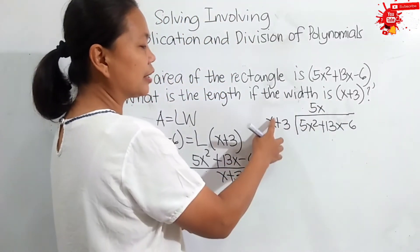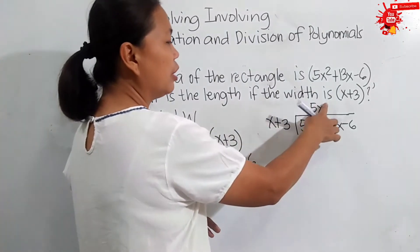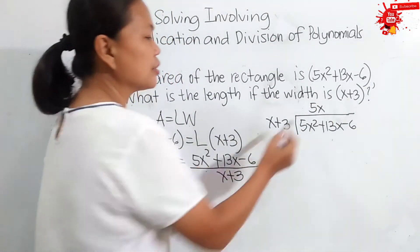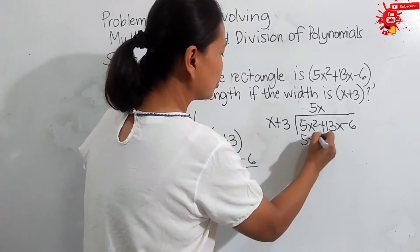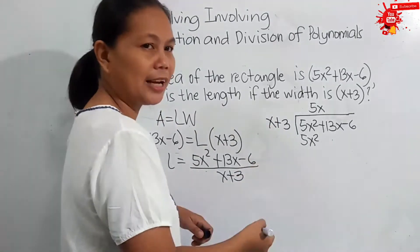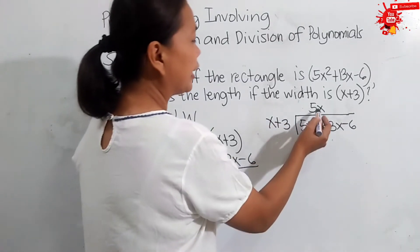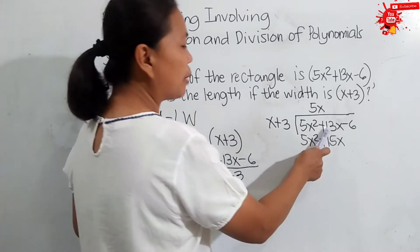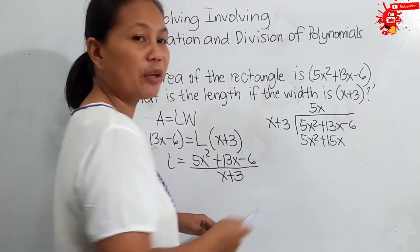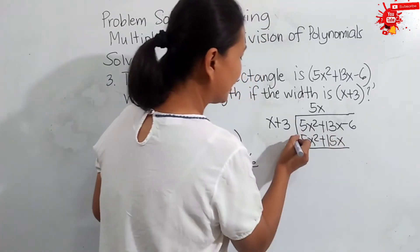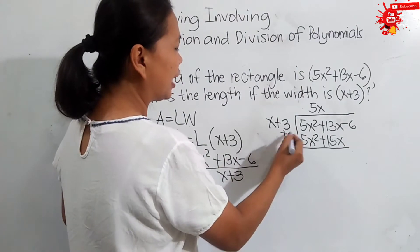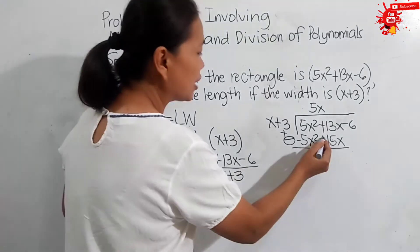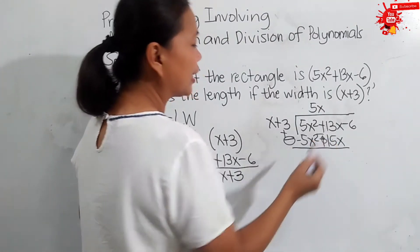We subtract the exponent of x: 2 minus 1 gives 1, so we have 5x. Now, we multiply 5x by x plus 3. So, 5x times x is 5x squared — we align it below 5x squared since they are similar terms. Then, 5x times positive 3 is positive 15x — we align it below positive 13x since they are similar terms. We change subtraction to addition, making 5x squared into negative 5x squared and positive 15x into negative 15x.